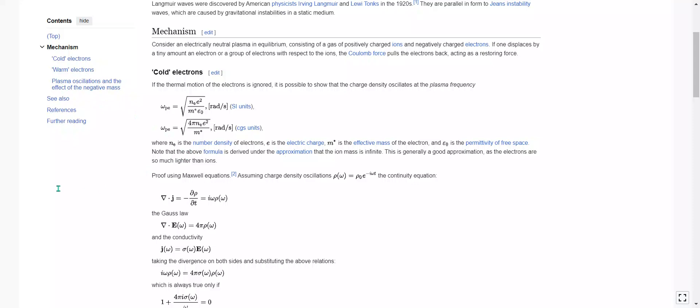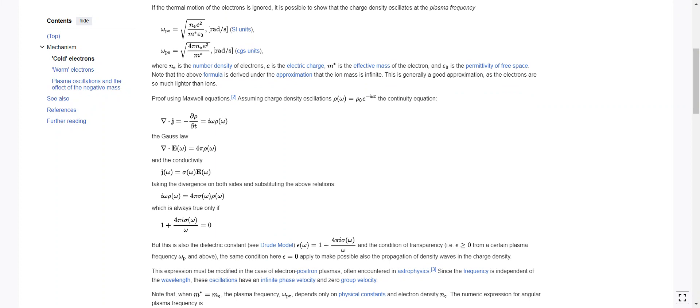So to just read over this one more time, the plasma frequency omega sub p e equals the square root of the number density of electrons times the electric charge squared over the effective mass of the electron times the permittivity of free space. Note that the above formula is derived under the approximation that the ion mass is infinite. This is generally a good approximation, as the electrons are so much lighter than ions.